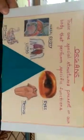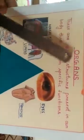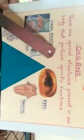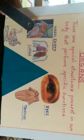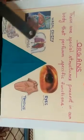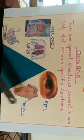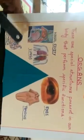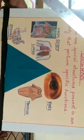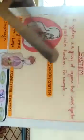Before starting this chapter, I'd like to recall the previous concept of organs. These are special structures present in our body that perform specific functions. These organs are divided into two parts: external organs and internal organs. External organs include eyes, tongue, and nose. Internal organs include examples like the nasal cavity, lungs, and stomach. A system is a group of organs that work together for a particular function.